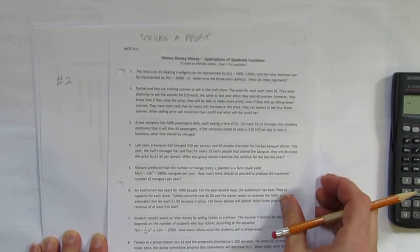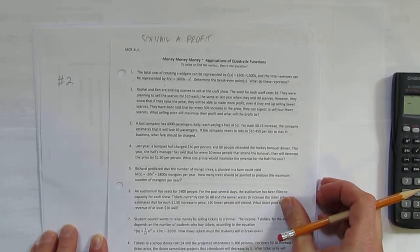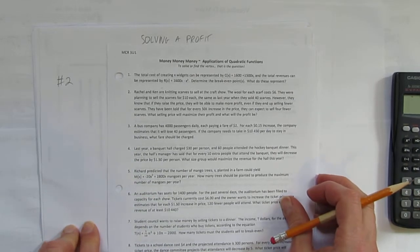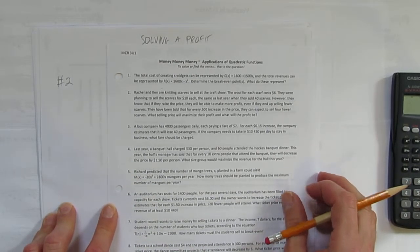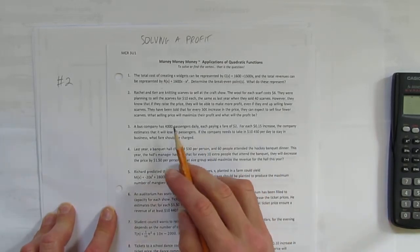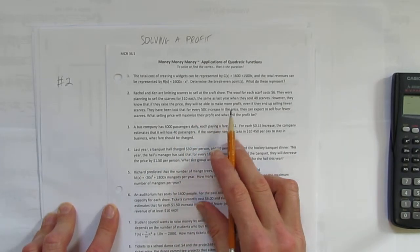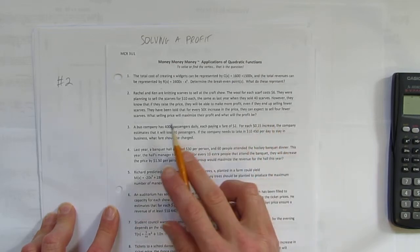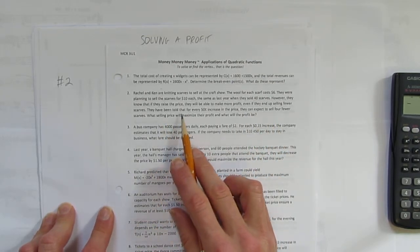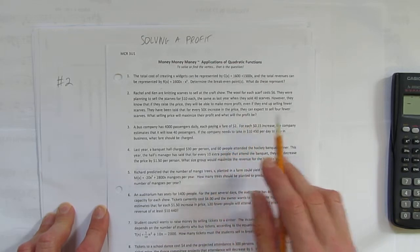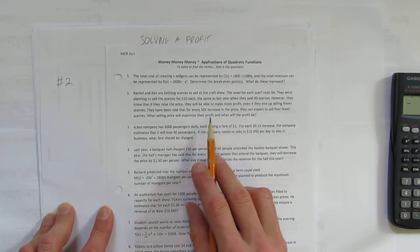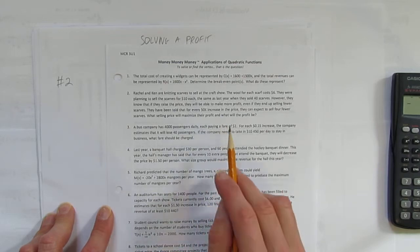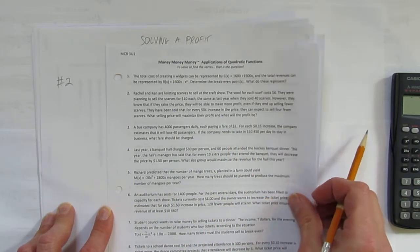It says Rachel and Ken are knitting scarves to sell at the craft show. The wool for each scarf costs $6. They were planning to sell the scarves for $10 each, the same as last year when they sold 40 scarves. However, they know if they raise the price, they will be able to make more profit even if they end up selling fewer scarves. They have been told that for every $0.50 increase in the price, they can expect to sell four fewer scarves. What is the selling price that will maximize their profit? And what will the profit be? So two questions to answer.